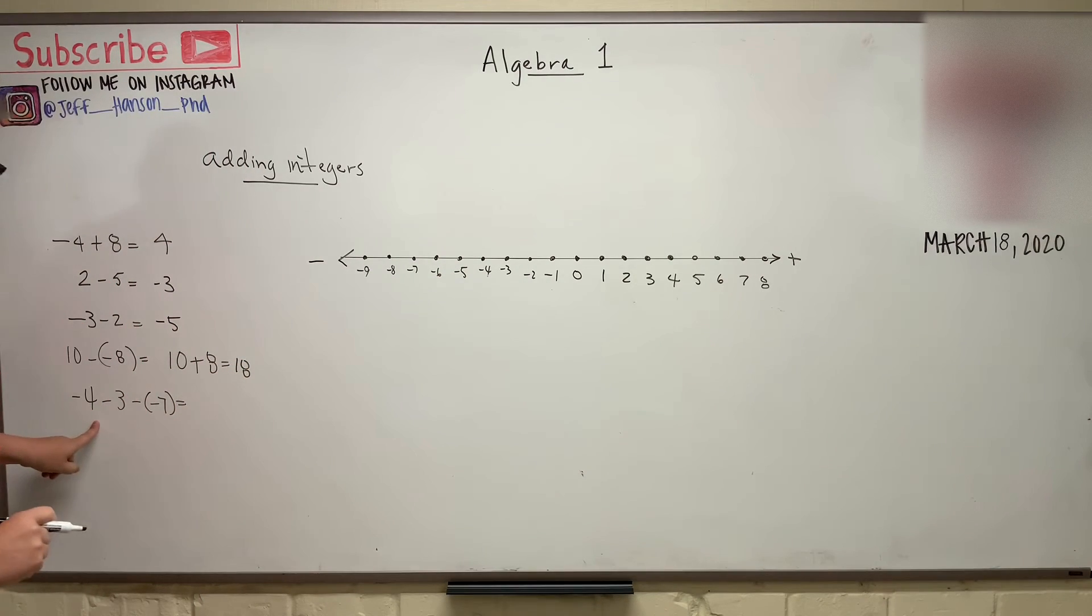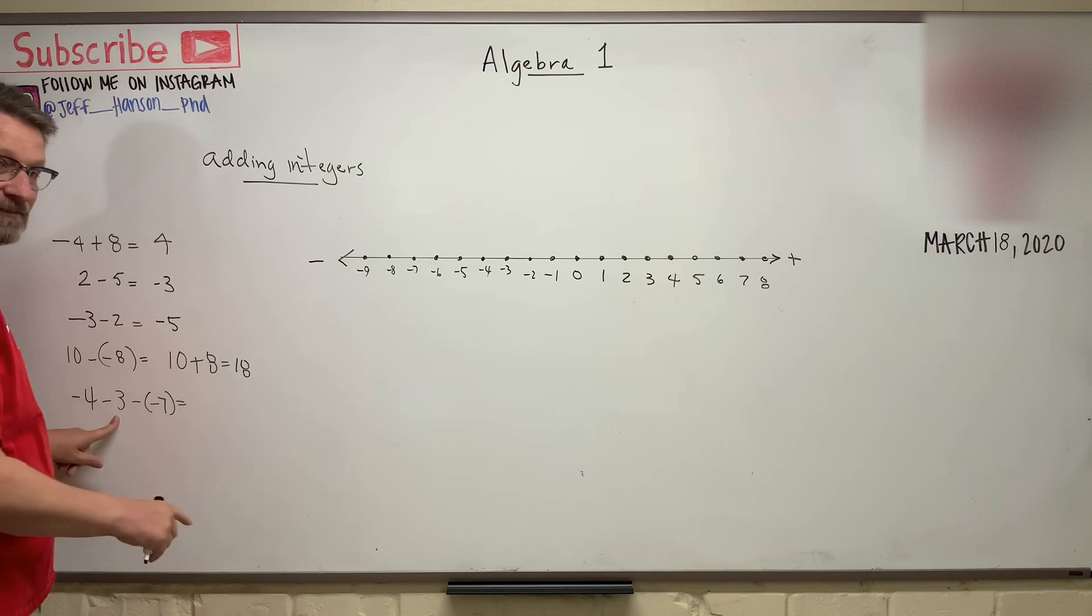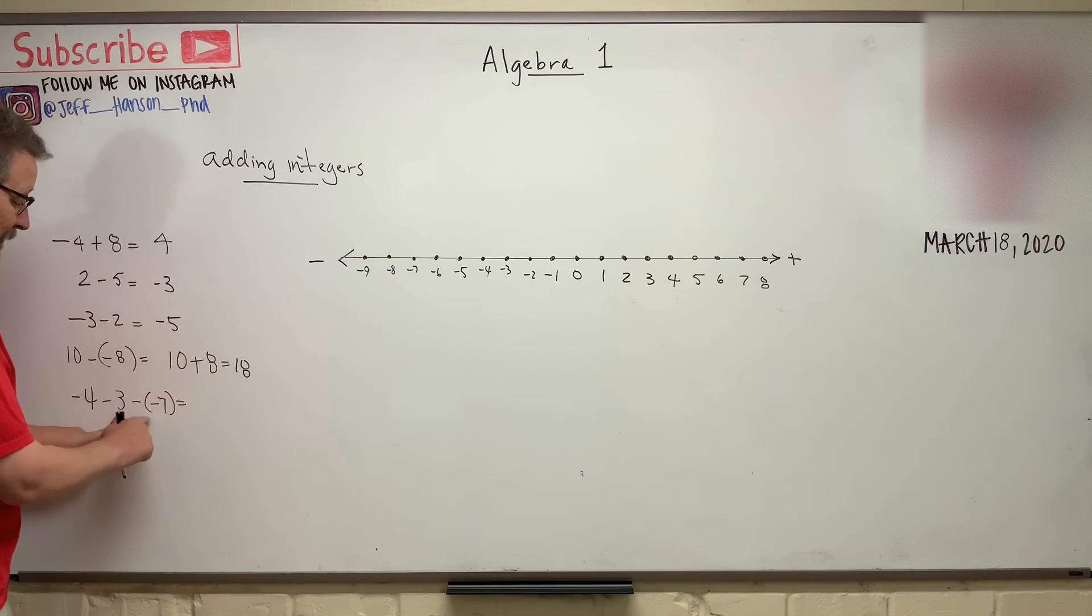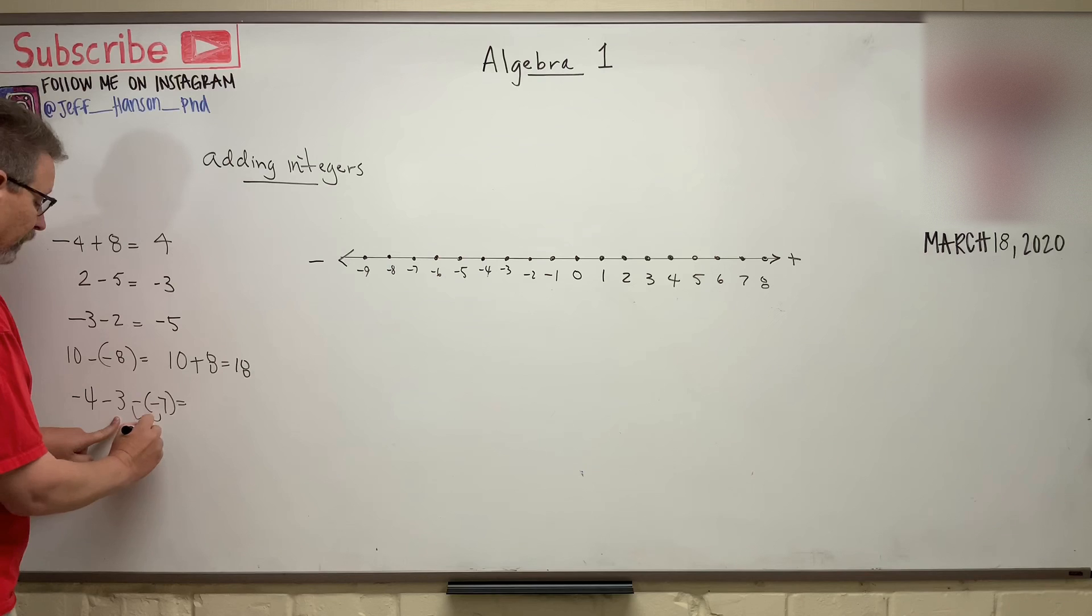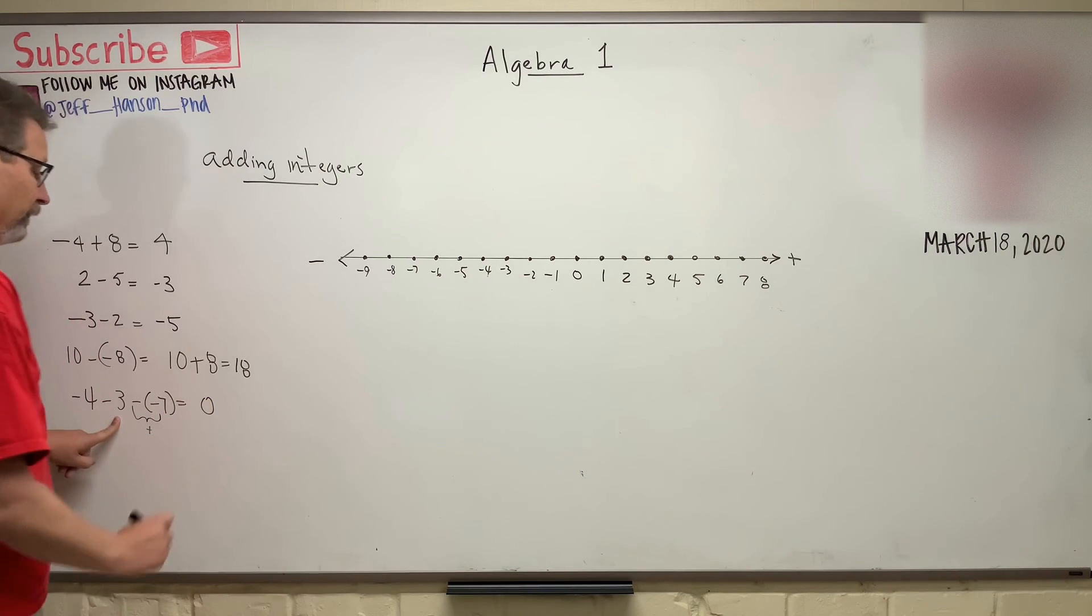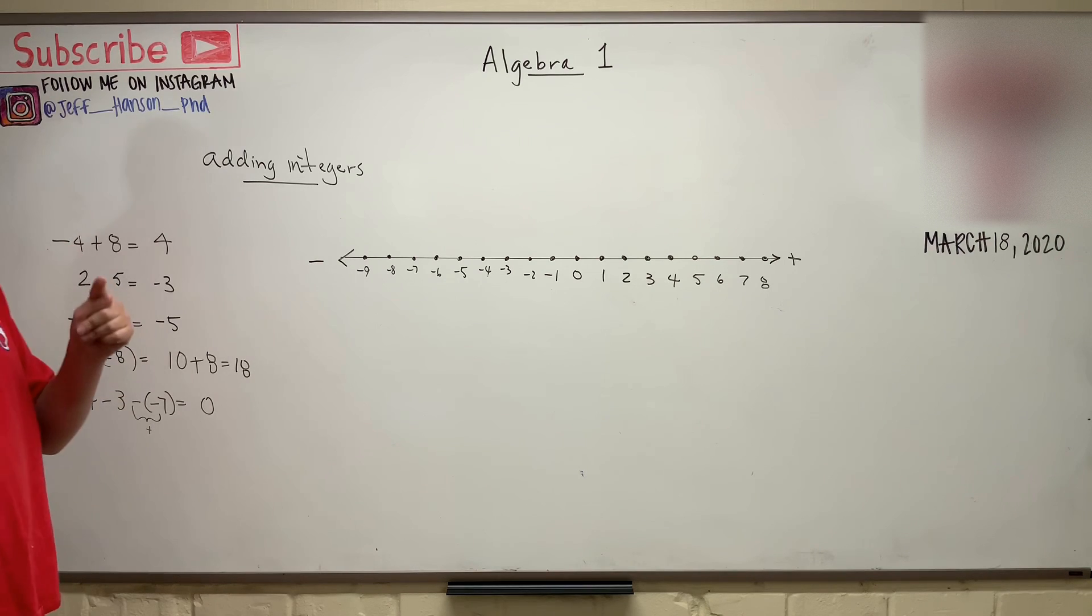And then finally, one more down here at the bottom. Minus four minus three, and you can do these one at a time. So minus four plus minus three is minus seven, and then minus a minus seven, which the minus and minus, that part right there just turns back into a plus, goes to zero. Simple. All right, let's do multiplying now.